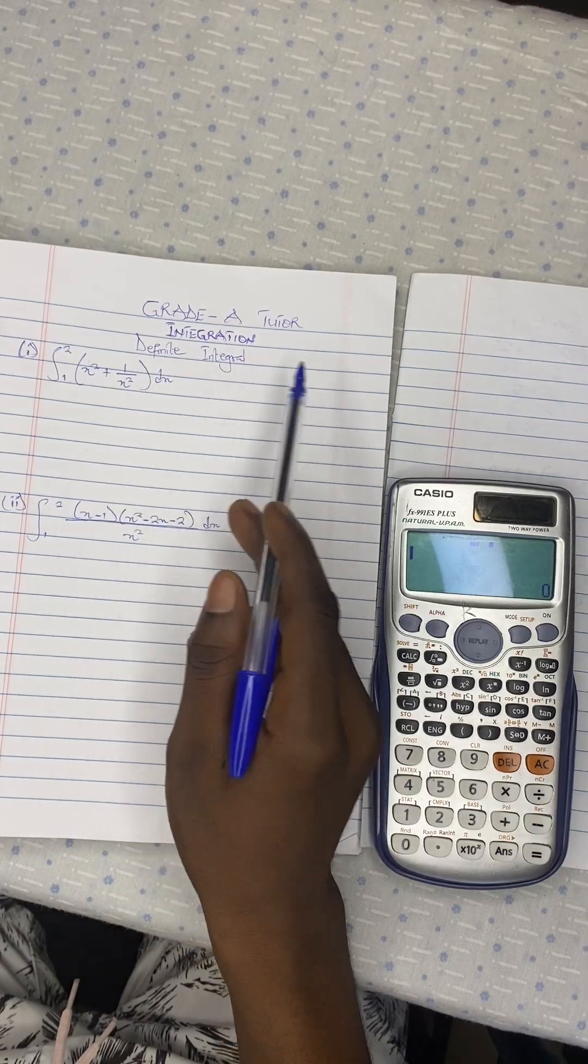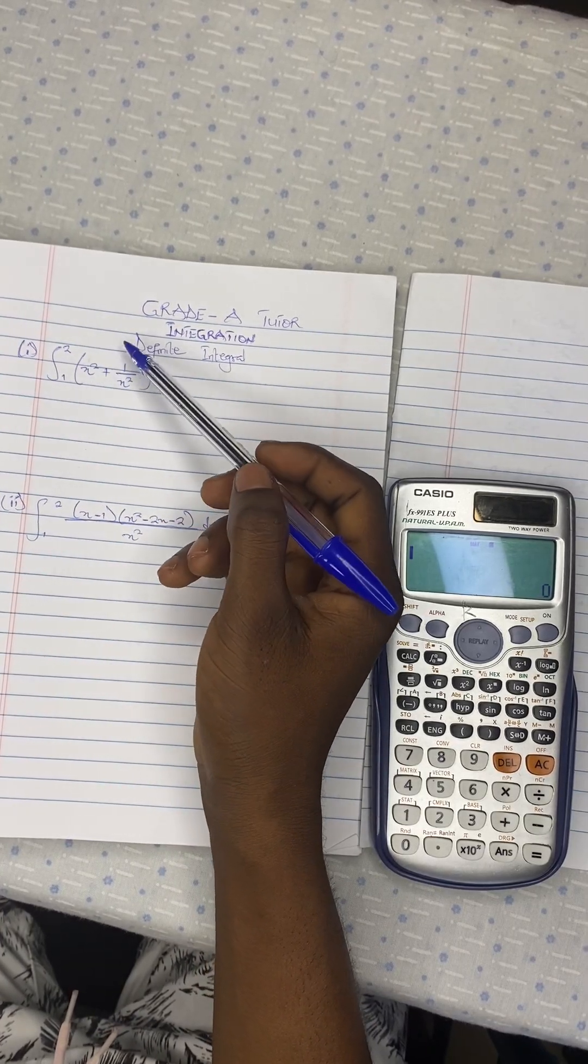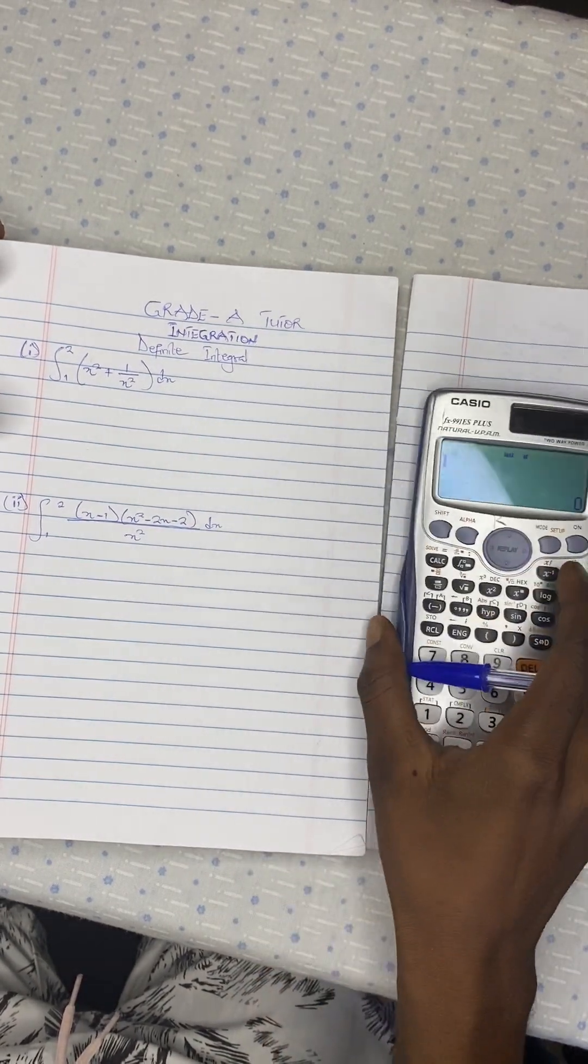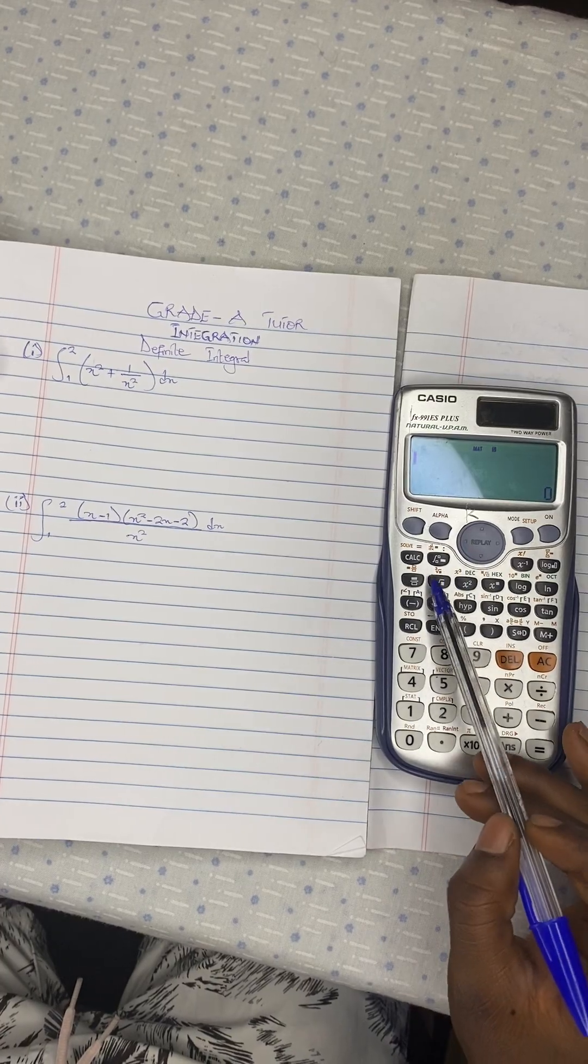For the definite integral, it means anytime you have been given the upper limit and the lower limit. So let's look at how to do it. You see on this key...